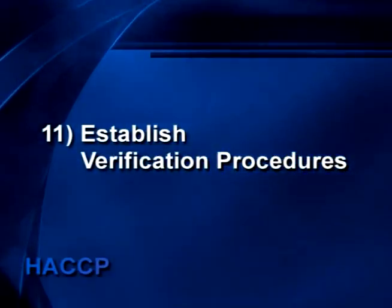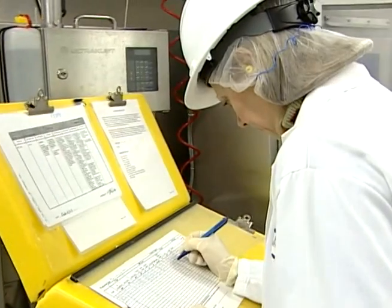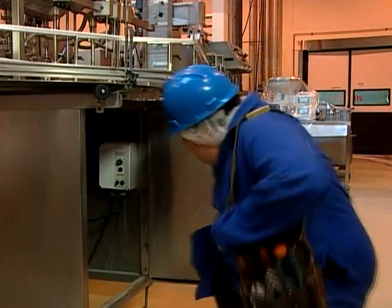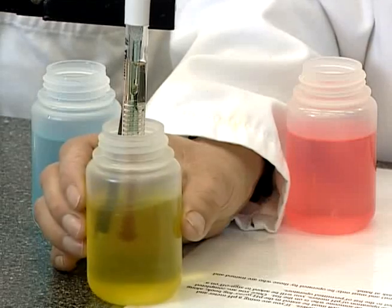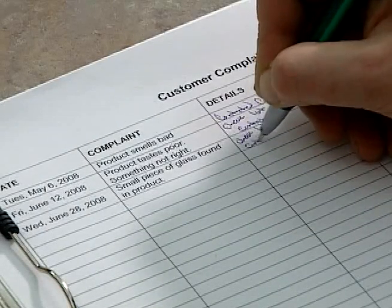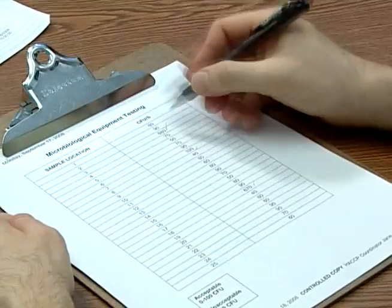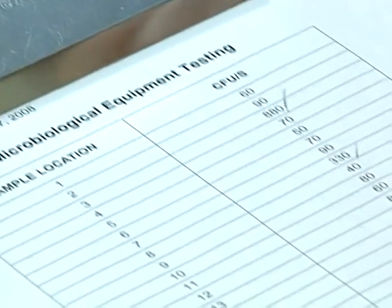Step 11 of setting up your HACCP system is to establish verification procedures. Once your HACCP system is in place, have it critically reviewed by quality assurance personnel, corporate food safety, or outside consultants. Verification procedures include checking monitoring records, observing operations at critical control points, checking calibration of monitoring instruments, analyzing and evaluating product to confirm safety, reviewing customer complaints for foodborne illness allegations and quality defects, and doing a statistical evaluation of monitoring data. Be sure to review your HACCP plan periodically and make changes indicated by your verification procedures.